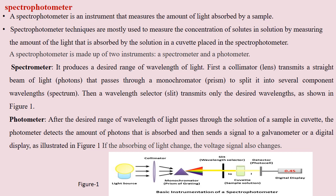The current flowing is determined by the galvanometer on a digital display. This part is the photometer. This device is used for measuring the amount of light absorbed by the solution placed in the cuvette or sample holder. This is known as a spectrophotometer.